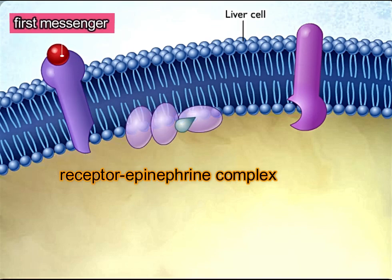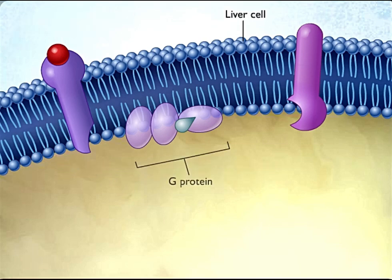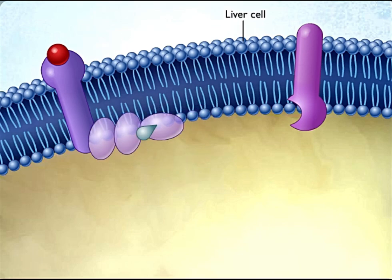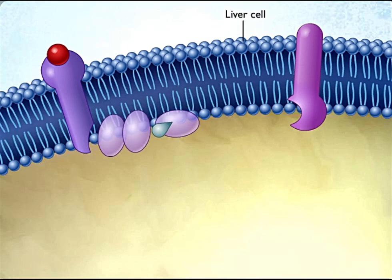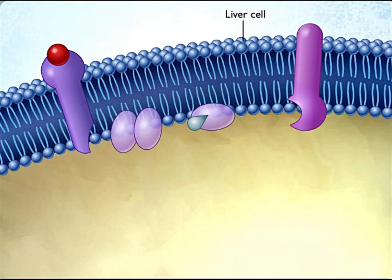When epinephrine binds to beta-adrenergic receptors on the liver cell, G proteins on the inner side of the cell membrane are activated. Each G protein is composed of three subunits, and the binding of epinephrine to its receptor protein causes one of the G protein subunits to dissociate from the other two. The G protein subunit which dissociates carries a GDP, which is replaced by GTP when the subunit is activated.